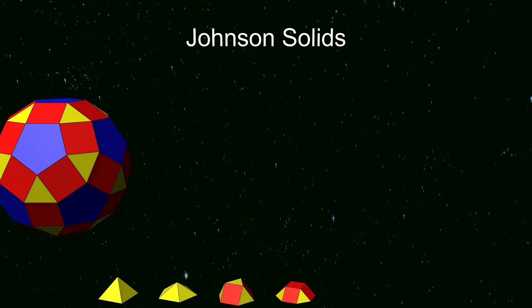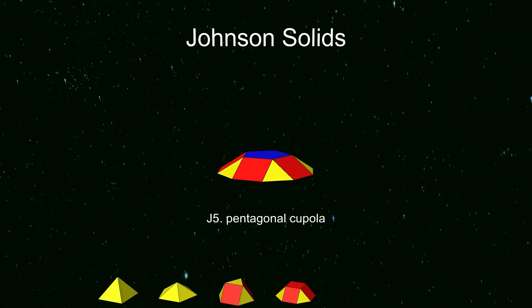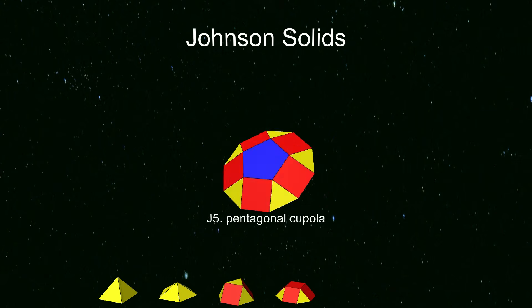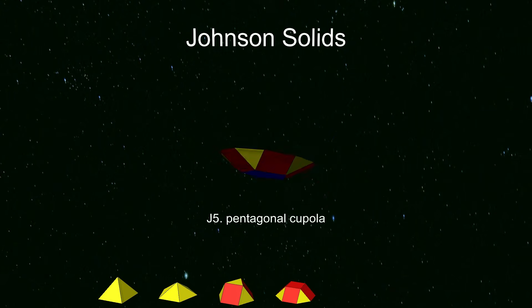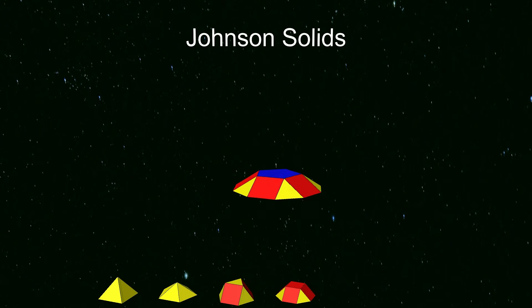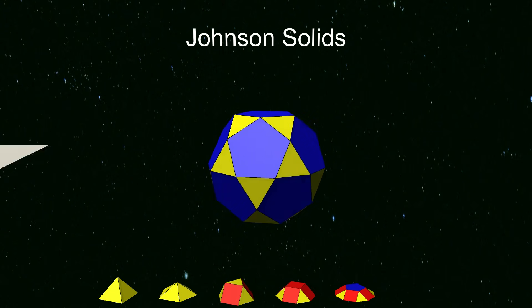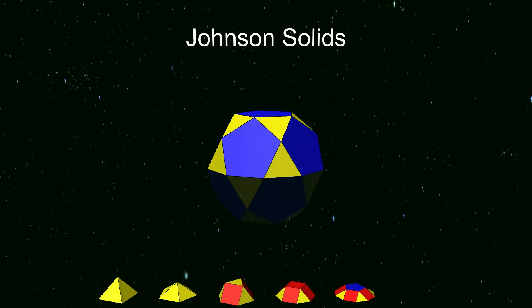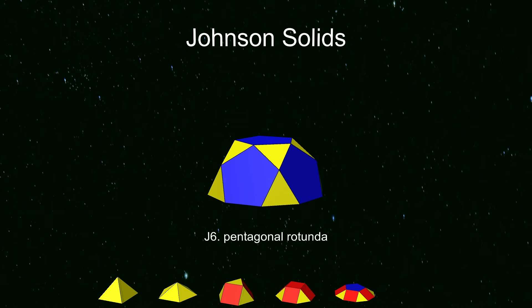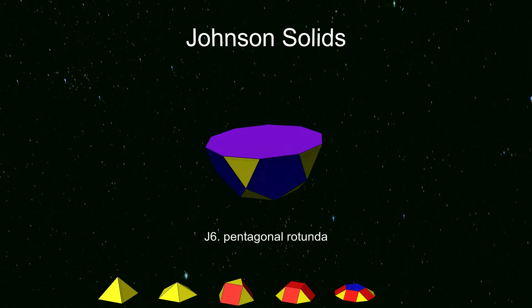The top of a rhombicosidodecahedron is a pentagonal cupola. Finally, half an icosahedron gives us this lovely shape, called a pentagonal rotunda.